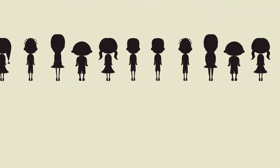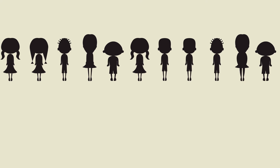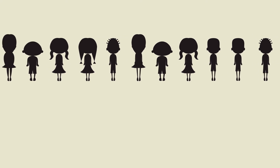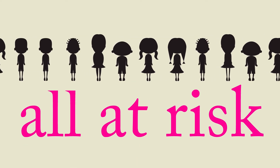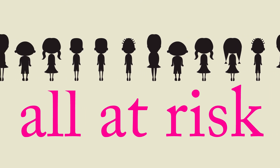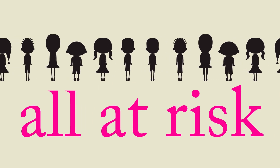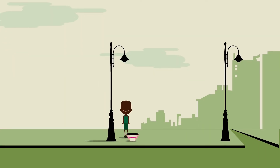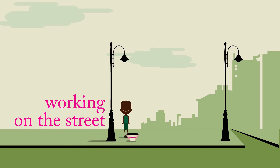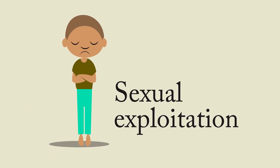All children subject to distressing situations such as conflict, persecution or lack of economic opportunity are at risk of potentially exploitative experiences. This is regardless of whether or not they've become separated from their community. Children in such situations are at risk of working on the street, child trafficking and sexual exploitation.